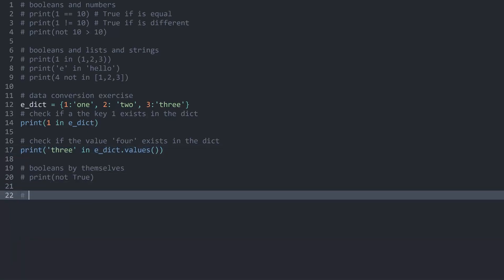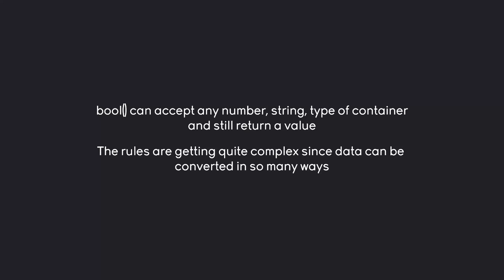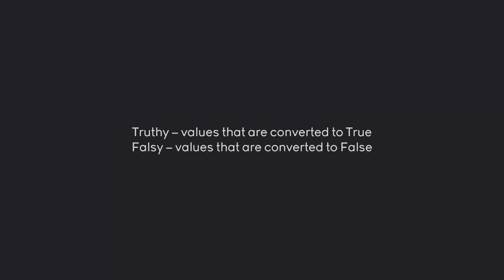There's one more really important topic: the bool function. bool is a function that creates a boolean data type and it can accept basically any kind of other data type — a number, a string, any type of container. Because bool accepts so many different values, there are different rules that determine how values are converted. You have some complex data and pass it into the boolean function to get true or false. Python has dedicated words for this: 'truthy' means all the values that will be converted to true, and 'falsy' is all the values that will be converted to false.